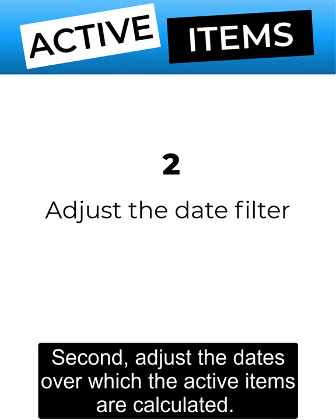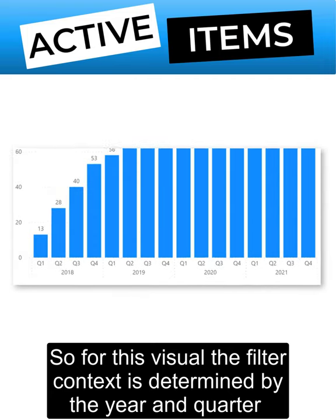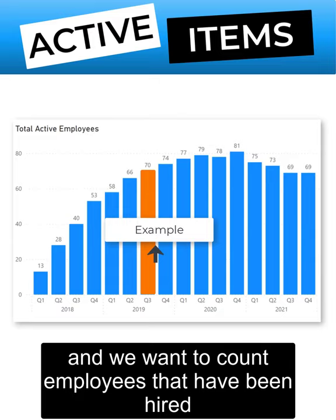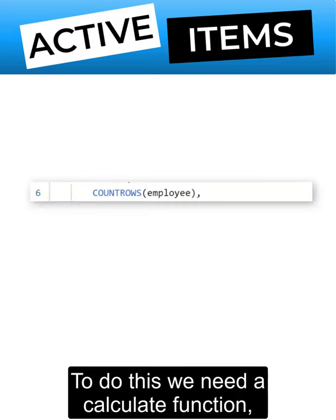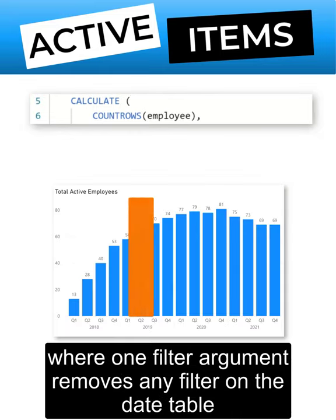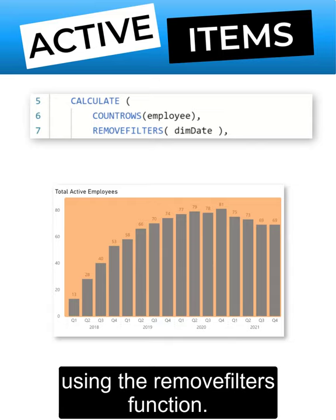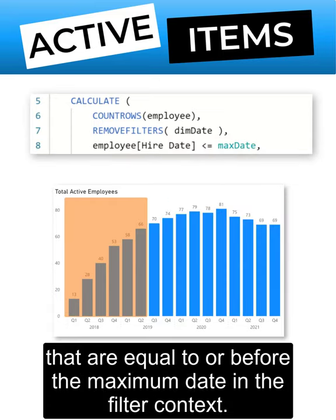Second, adjust the dates over which the active items are calculated. So for this visual, the filter context is determined by the year and quarter, and we want to count the employees that have been hired up to the last date in the quarter we do the count for. To do this, we need a CALCULATE function, where one filter argument removes any filter on the date table using the REMOVEFILTERS function, and another filter argument to only keep dates that are equal to or before the maximum date in the filter context.